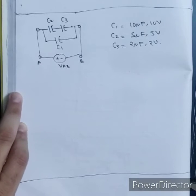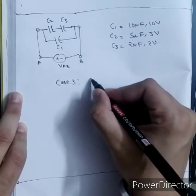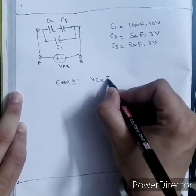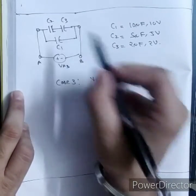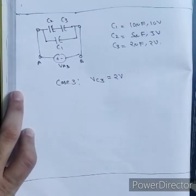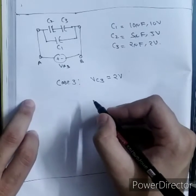Case 3: I am assuming VC3 to be 2V. That is voltage across capacitor 3 is 2V. If I apply 2V across capacitor C3, capacitor C3 will not go to breakdown. We have to find whether C2 or C1 will go to breakdown and what is the value of VAB if I apply 2V across capacitor C3.